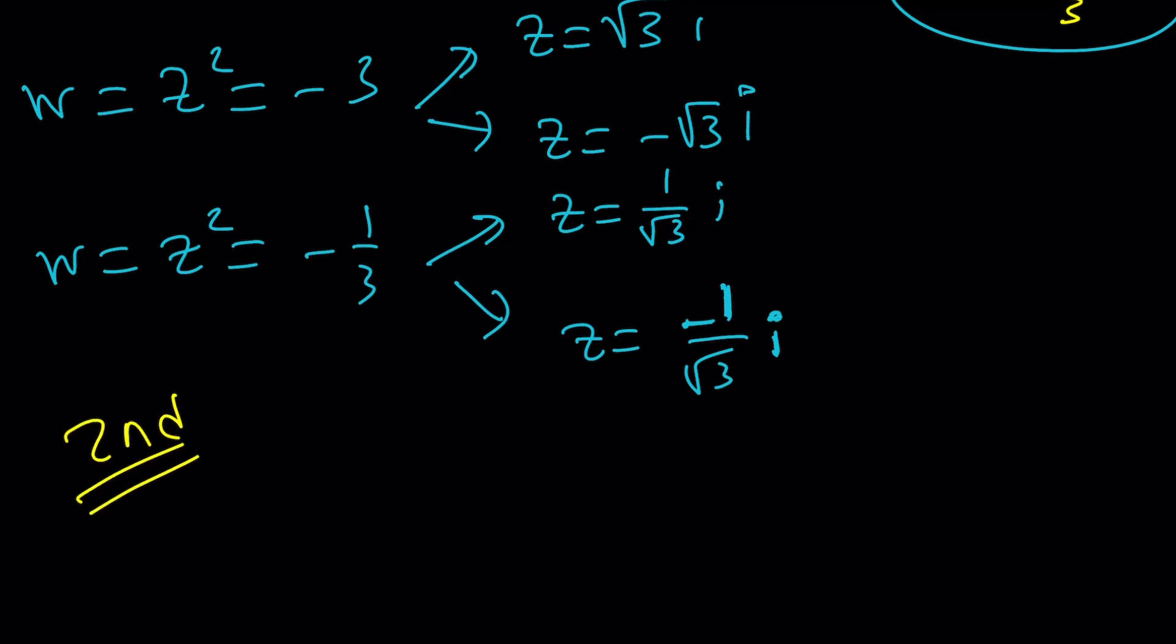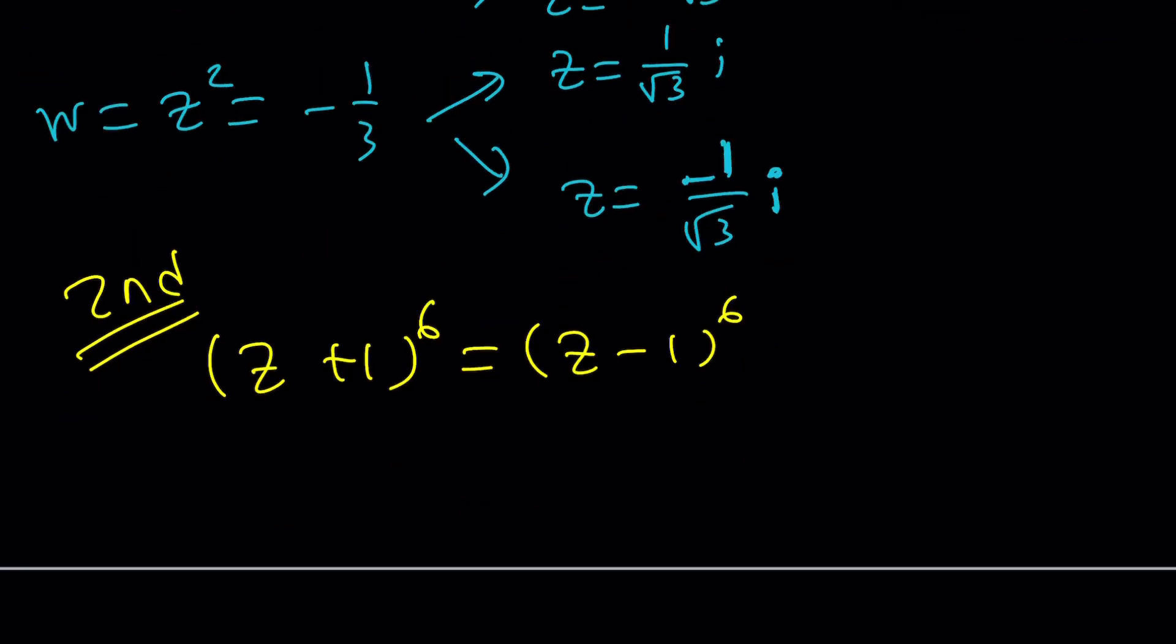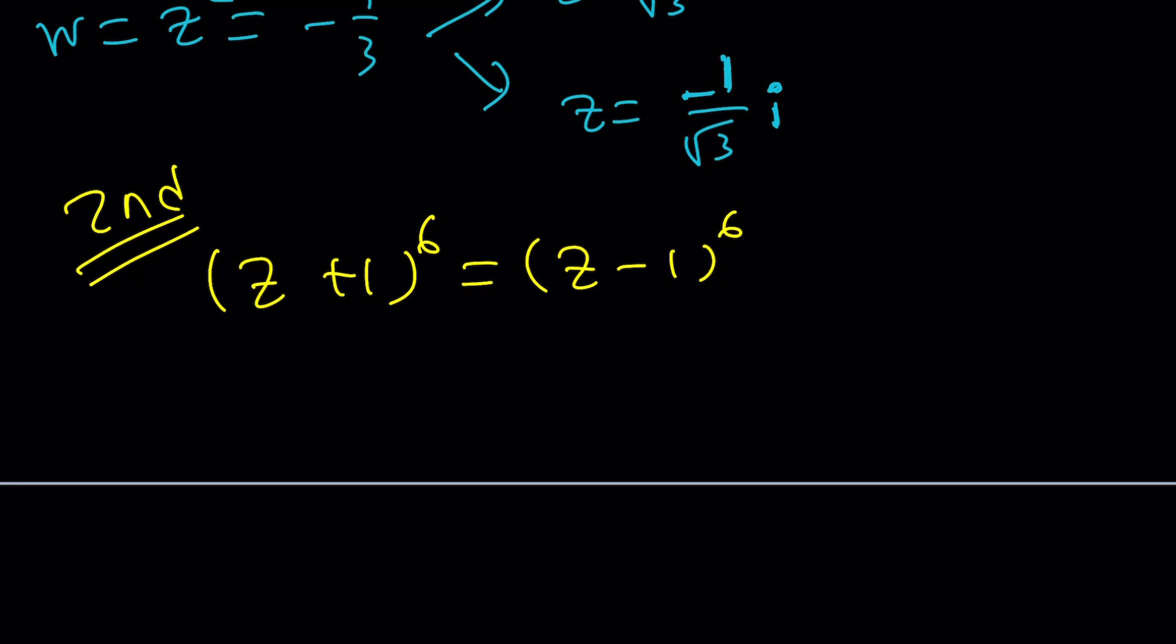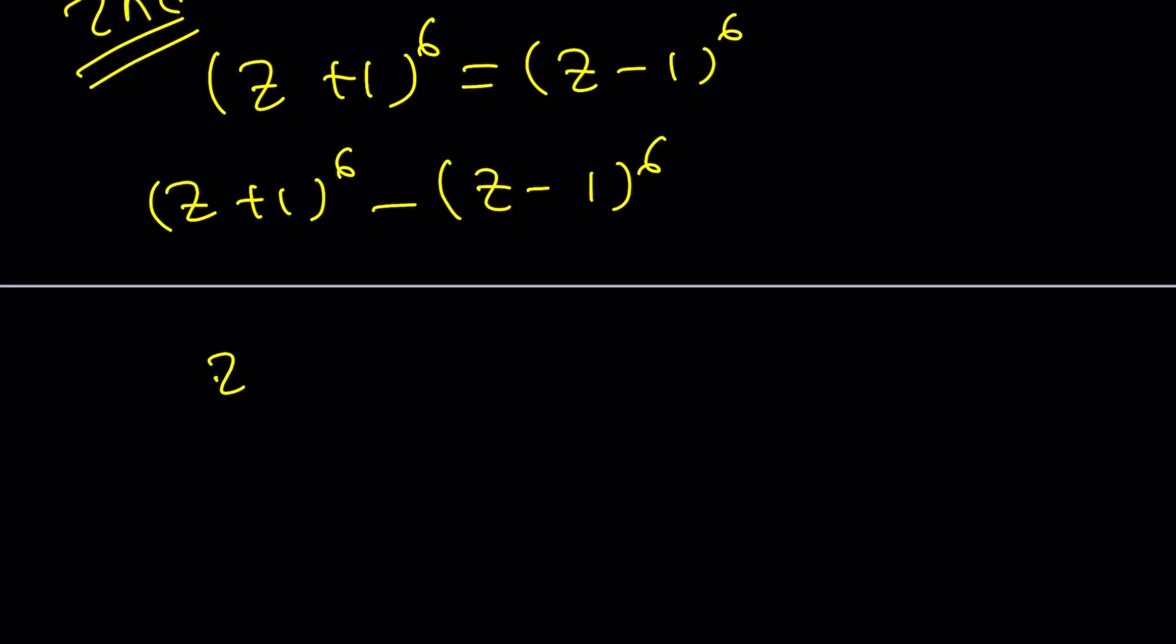My second method is actually going to use a different idea and that will be factoring. And the factoring is basically we can put these on the same side and then use some formulas, some identities. Which identities should I use? Well, I could probably use difference of two cubes because this can be written as Z plus 1 squared cubed minus Z minus 1 squared and then cubed. Let's focus on the cubes first on the outside. So difference of two cubes.